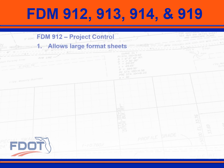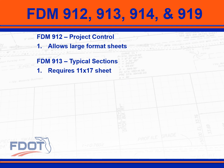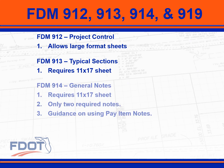FDM 912 is mostly unchanged but allows large format sheets to be used. FDM 913 was reorganized and a large number of text edits made; these sheets are restricted to standard size sheets. FDM 914 removed most of the required general notes and provided guidance on when pay item notes are used; these sheets are also restricted to standard size sheets.